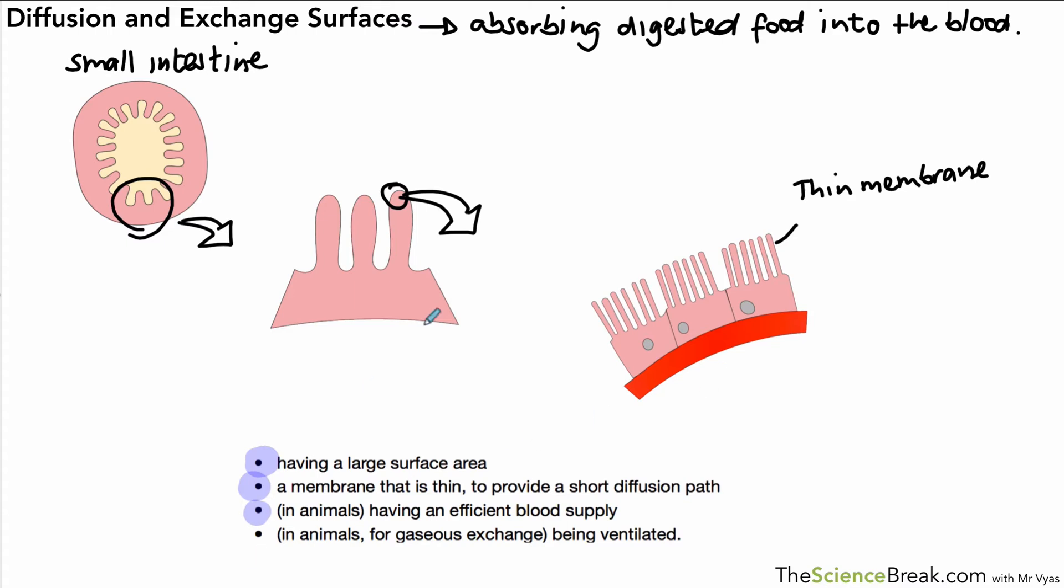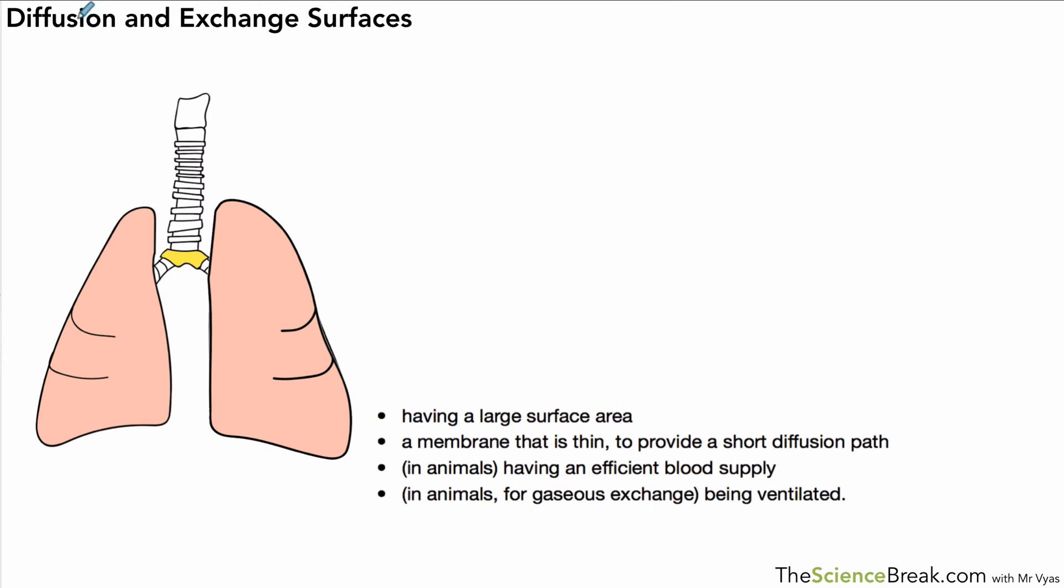It also has an efficient blood supply so there's the blood there shown by the red section of that diagram but if you were to look in the diagram just before you actually notice that there's a whole network of capillaries, blood capillaries, that supply the inside part of the small intestine there. Those are actually, they're sticking out, things are actually called villi. The last one doesn't apply so that's how we can explain how the small intestine increases exchange of substances.